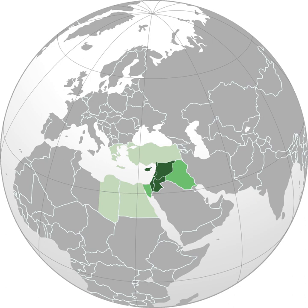The term Levant, which appeared in English in 1497, originally meant the east in general or 'Mediterranean lands east of Italy'. It is borrowed from the French Levant, meaning 'rising', referring to the rising of the sun in the east, or the point where the sun rises. The phrase is ultimately from the Latin word levare, meaning 'lift, raise'.